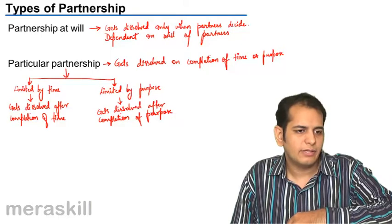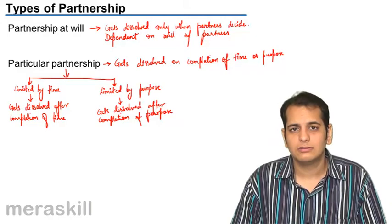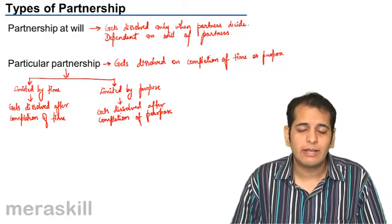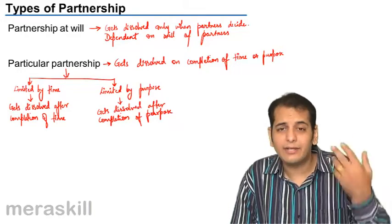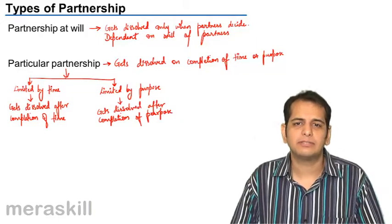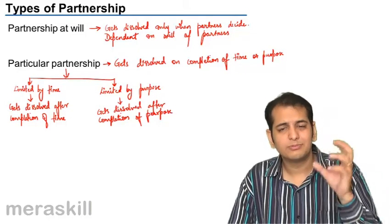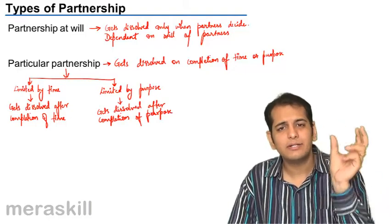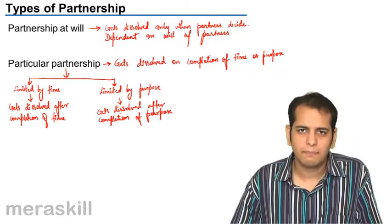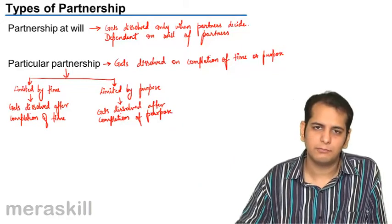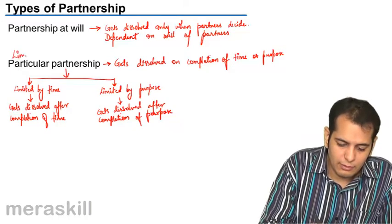For example, H, I, and J form a partnership to purchase a car, renovate it, and sell it. So once that car is purchased, renovated, and sold, the objective of the partnership is complete and the partnership will dissolve. So these are partnerships which have a limited time period or are formed for a limited purpose — they dissolve after that time or that purpose is over. Thus they are also called as limited partnership.